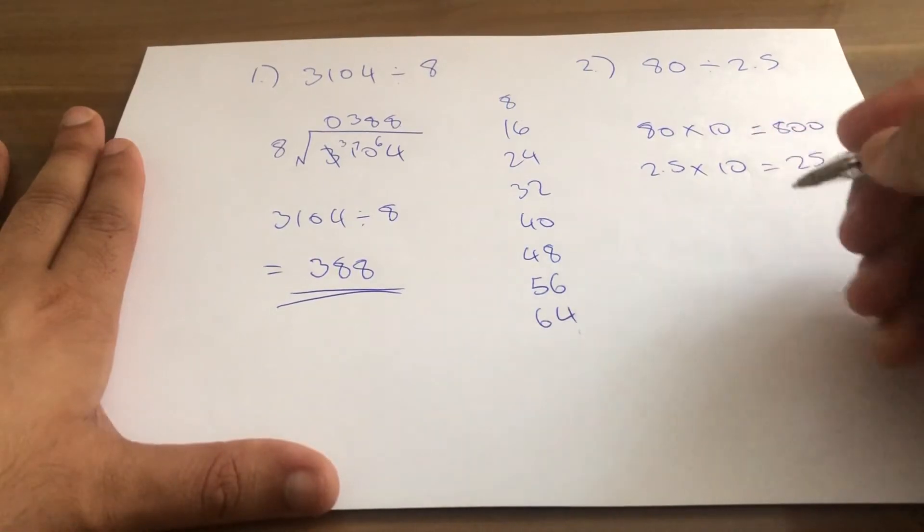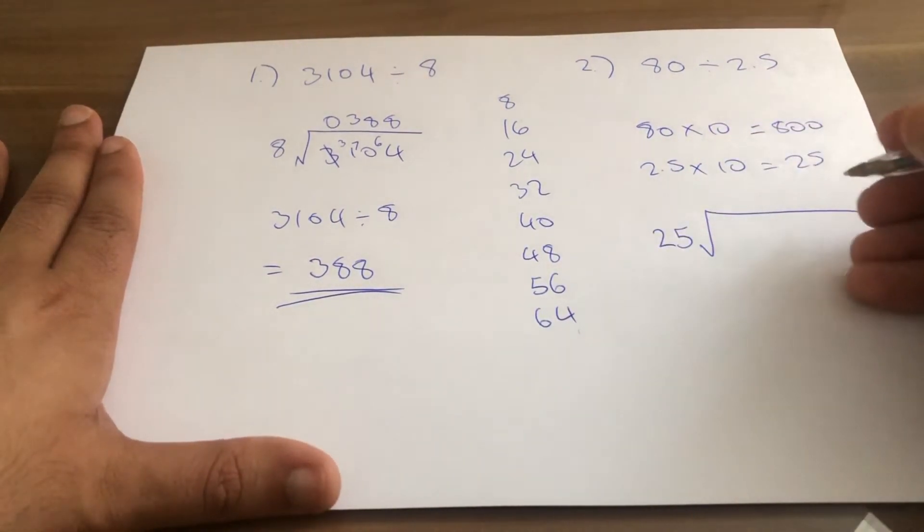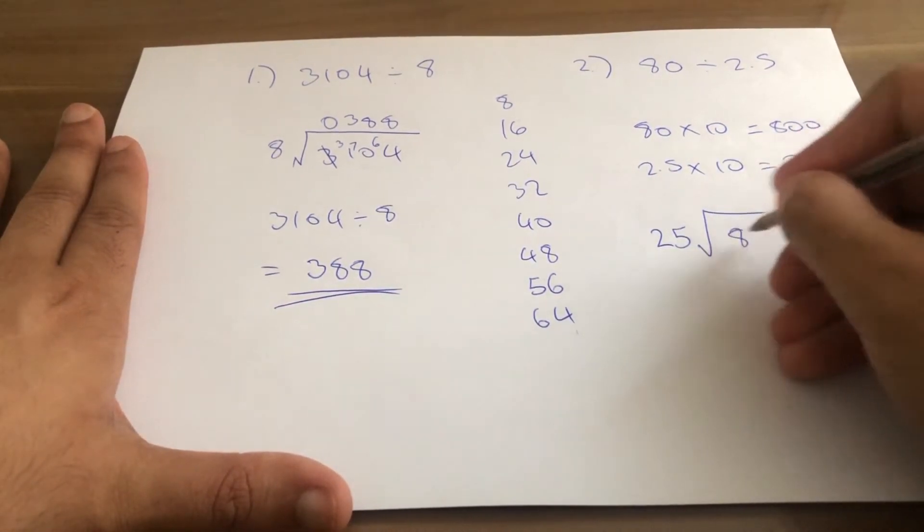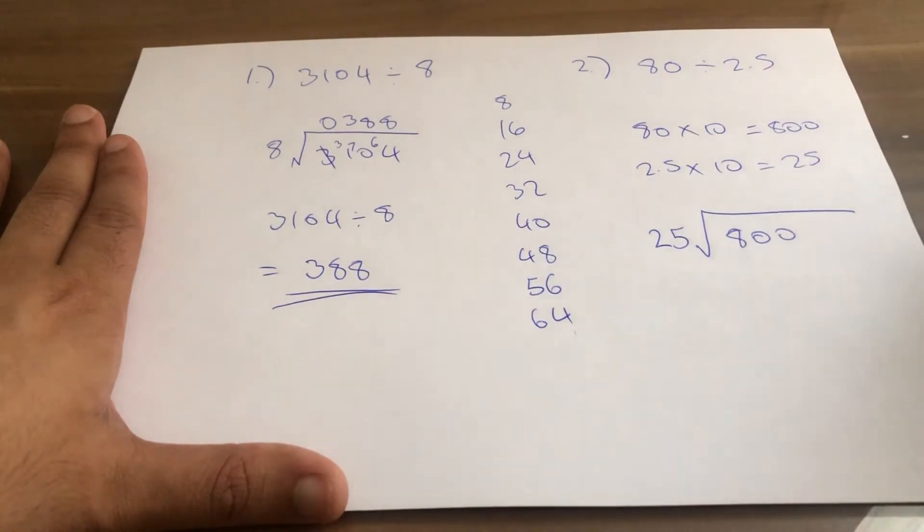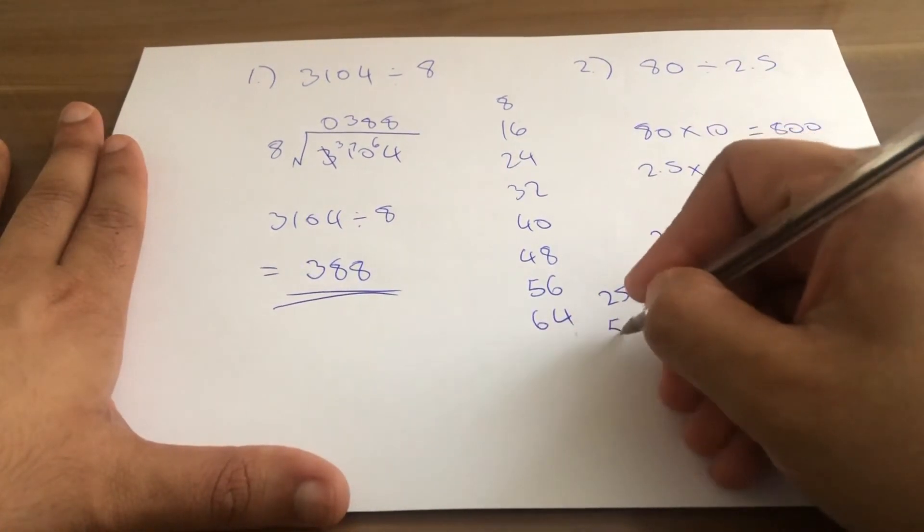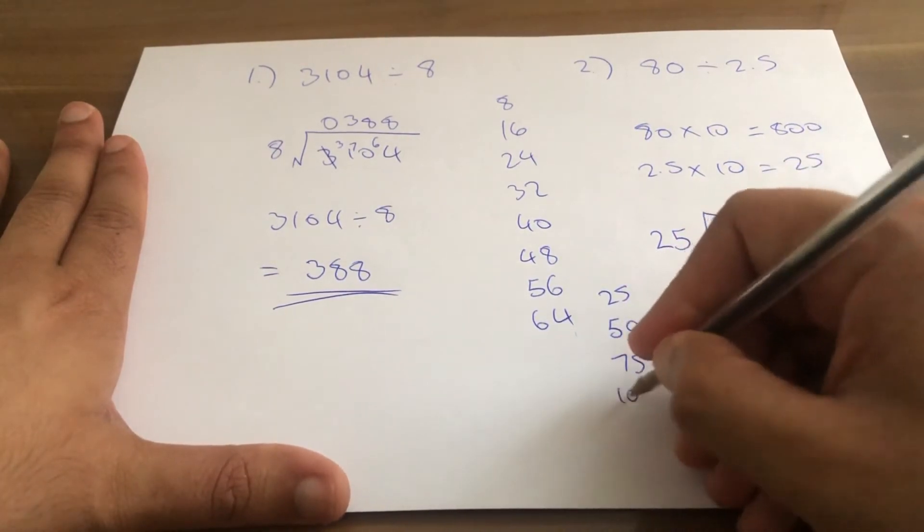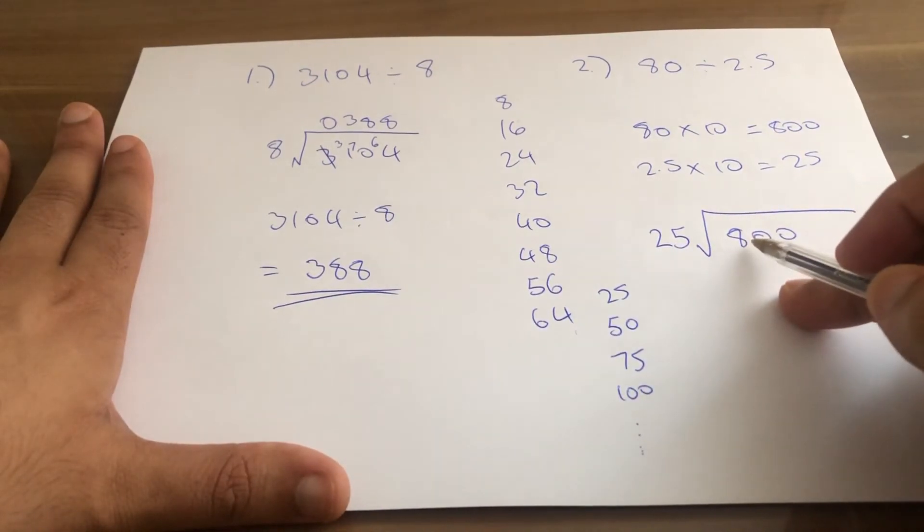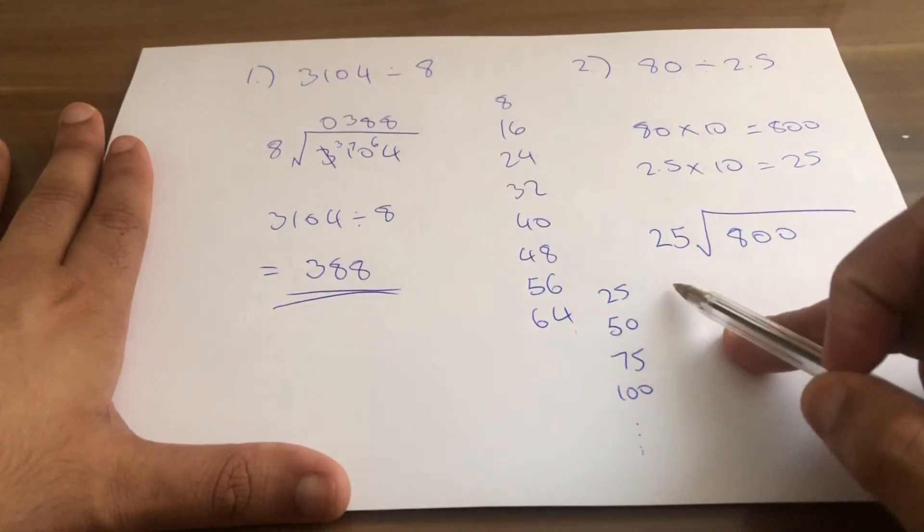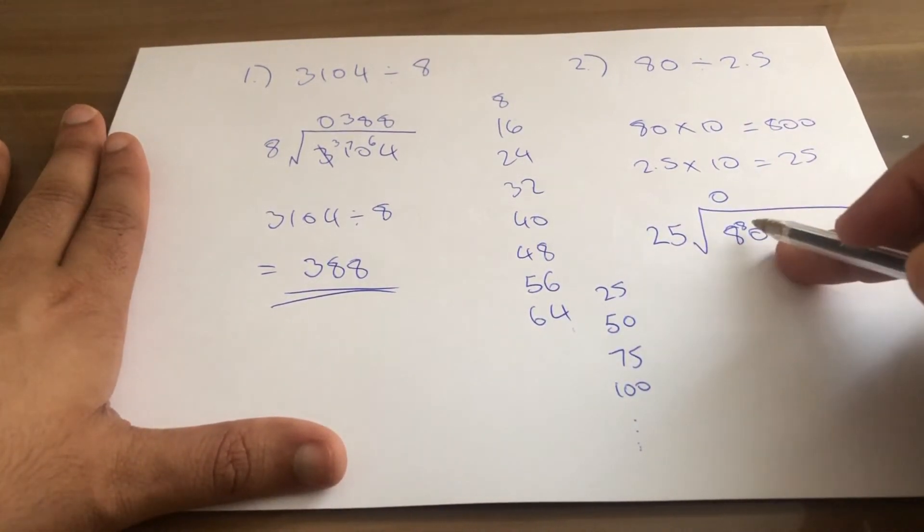So 25 goes into 800. How many times does 25 go into 8? Before we do anything, let's recall: 25, 50, 75, 100, and so on. 25 goes into 8 zero times, carry 8 over. How many times does 25 go into 80?